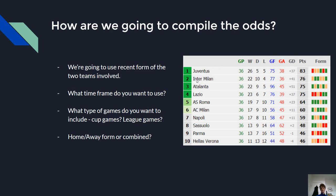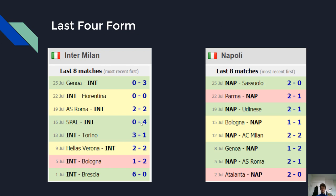In our example we're going to use Inter Milan versus Napoli. Here you can see Inter Milan's last eight matches and we're going to focus on the last four: a win against Genoa, two draws, and then another win — so two wins and two draws. For Napoli we focus on the last four: two wins, one loss, and a draw.